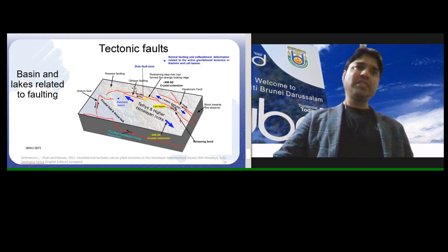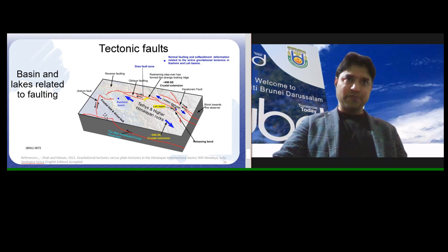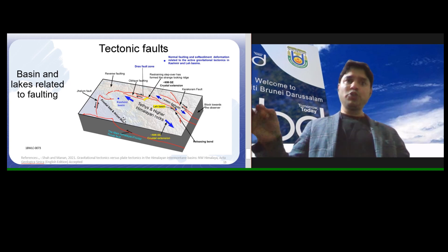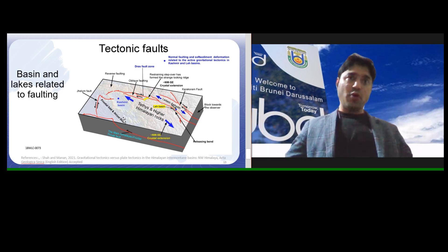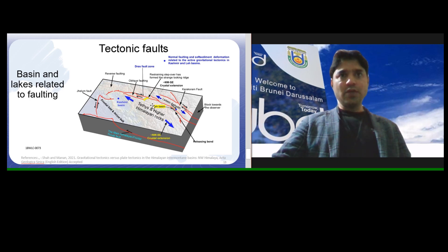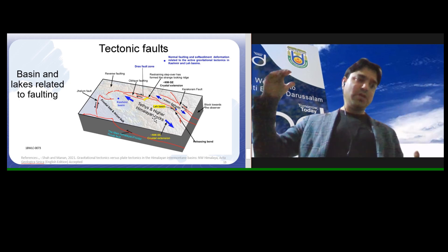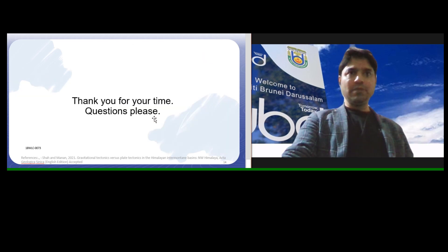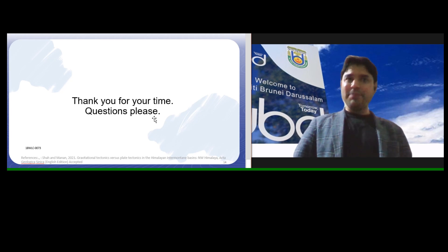In summary: in the frontal thrust belt, basins and lakes are mainly related to thrusting, creating piggyback basins and fold-related basins. In the interior, crustal extension in the northwest-southeast direction is controlled by normal faults and strike-slip systems, dominating basin formation there. This makes a very clean and clear case for how basins and lakes are linked to tectonic convergence in the northwestern Himalayas. Thank you very much.